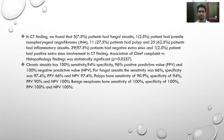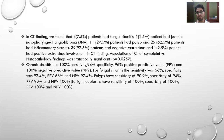Association between CT and histopathological findings was statistically significant with a p-value of 0.0257. Chronic sinusitis showed 100 percent sensitivity, 94 percent specificity, 96 percent positive predictive value, and 100 percent negative predictive value. For fungal sinusitis, sensitivity was low at 66 percent but specificity was high at 97.4 percent. Polyp had sensitivity of 90.9 percent, specificity of 94 percent, positive predictive value of 90 percent, and negative predictive value of 100 percent. Benign neoplasm, including juvenile nasopharyngeal angiofibroma, had 100 percent sensitivity, specificity, positive predictive value, and negative predictive value.